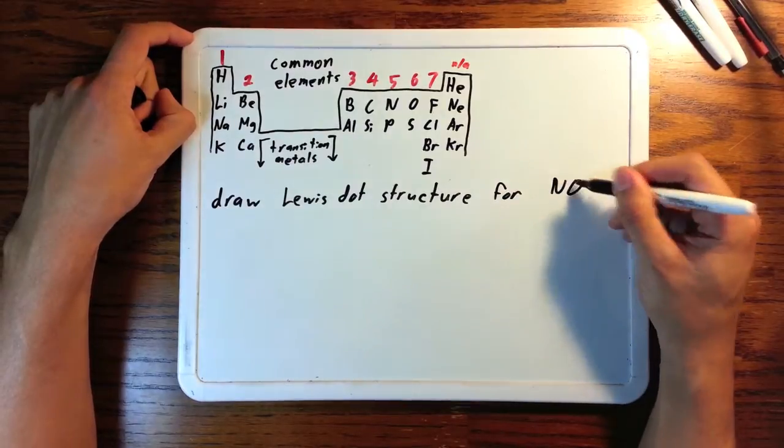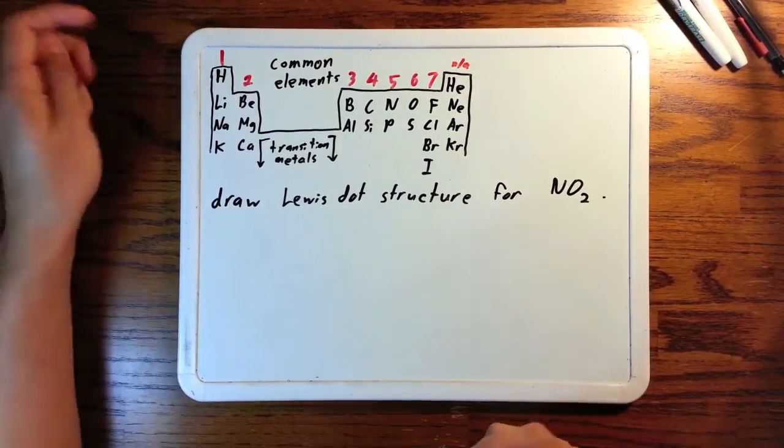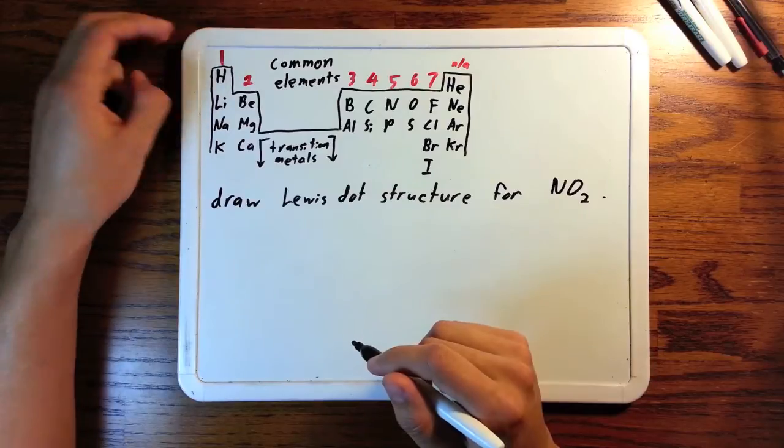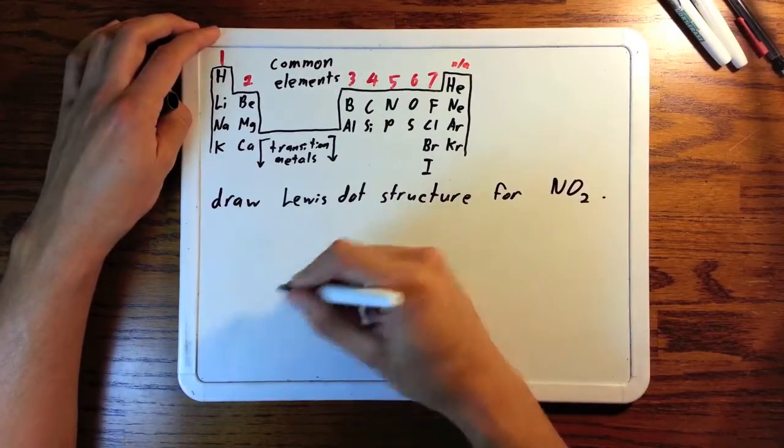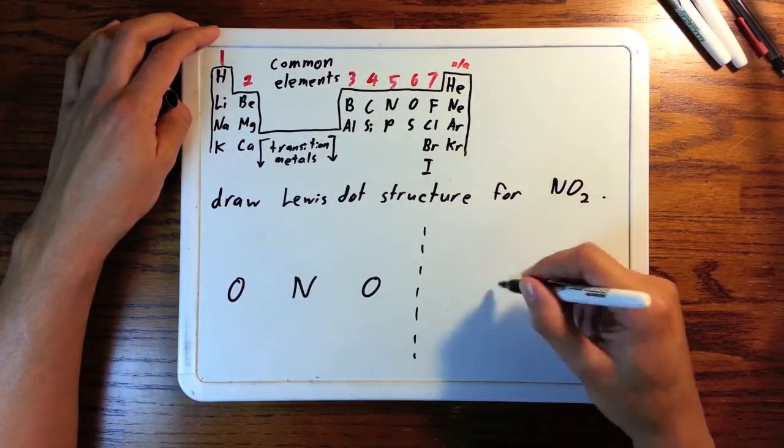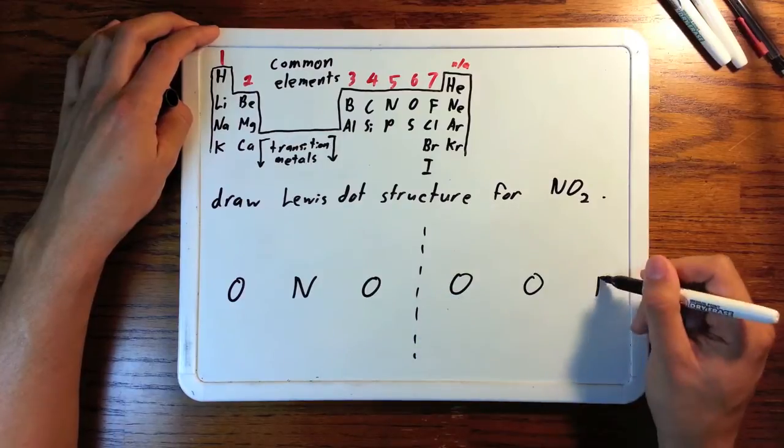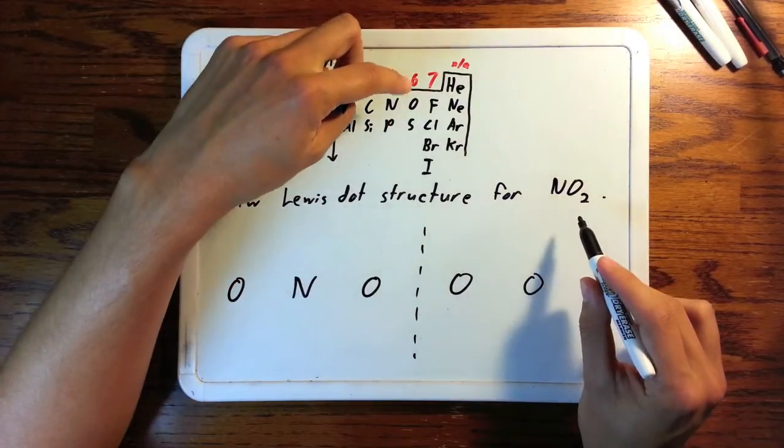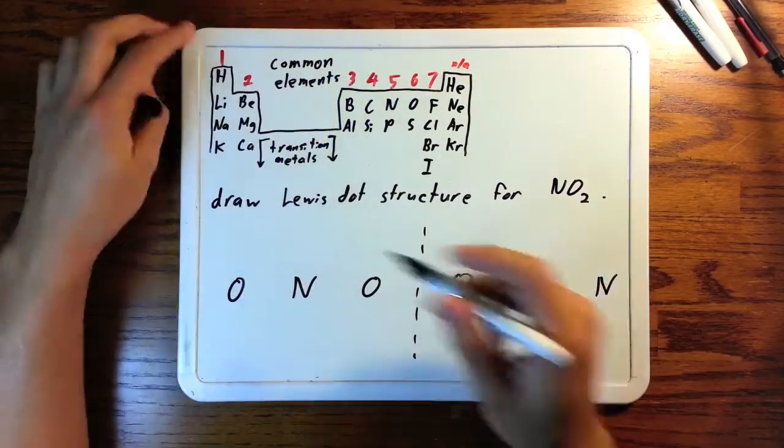Let's say you were asked to draw the structure for NO2, and for some reason you couldn't just Google it. Maybe it's a test. There are two possible ways this could go, with the N in the middle or with the N on the end. We're going to try and figure out which is the better Lewis structure using formal charge.